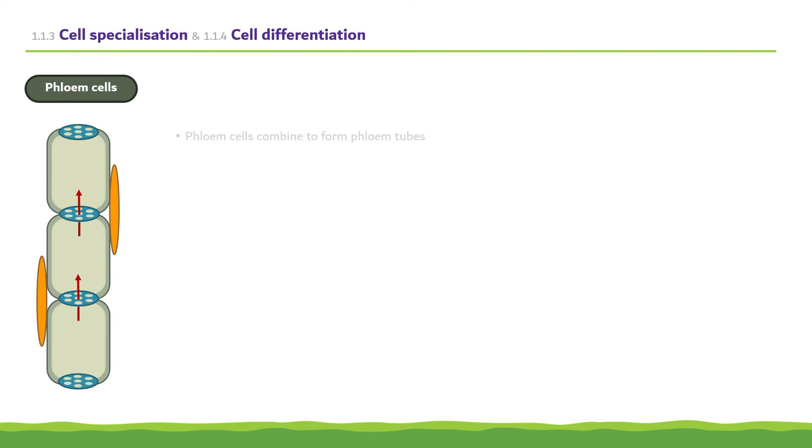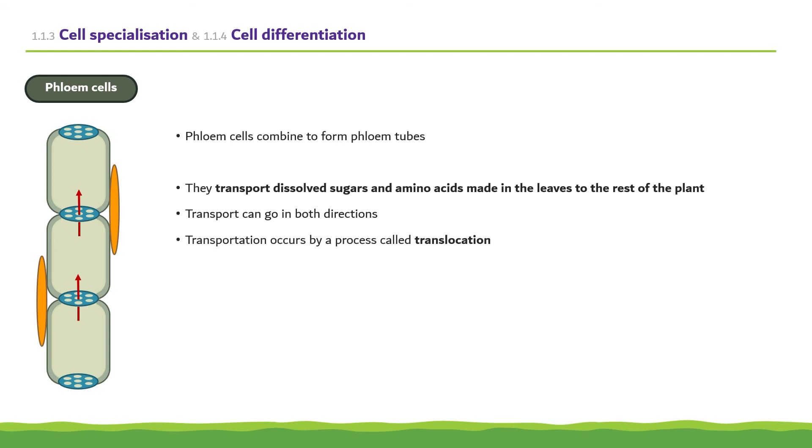Another specialized plant cell are phloem cells. The phloem cells combine to form phloem tubes. They transport dissolved sugars and amino acids made in the leaves to the rest of the plant. This transport can go in both directions and occurs by a process called translocation. Sieve plates are found between the cells and companion cells provide the energy required to transport the substances in the phloem.